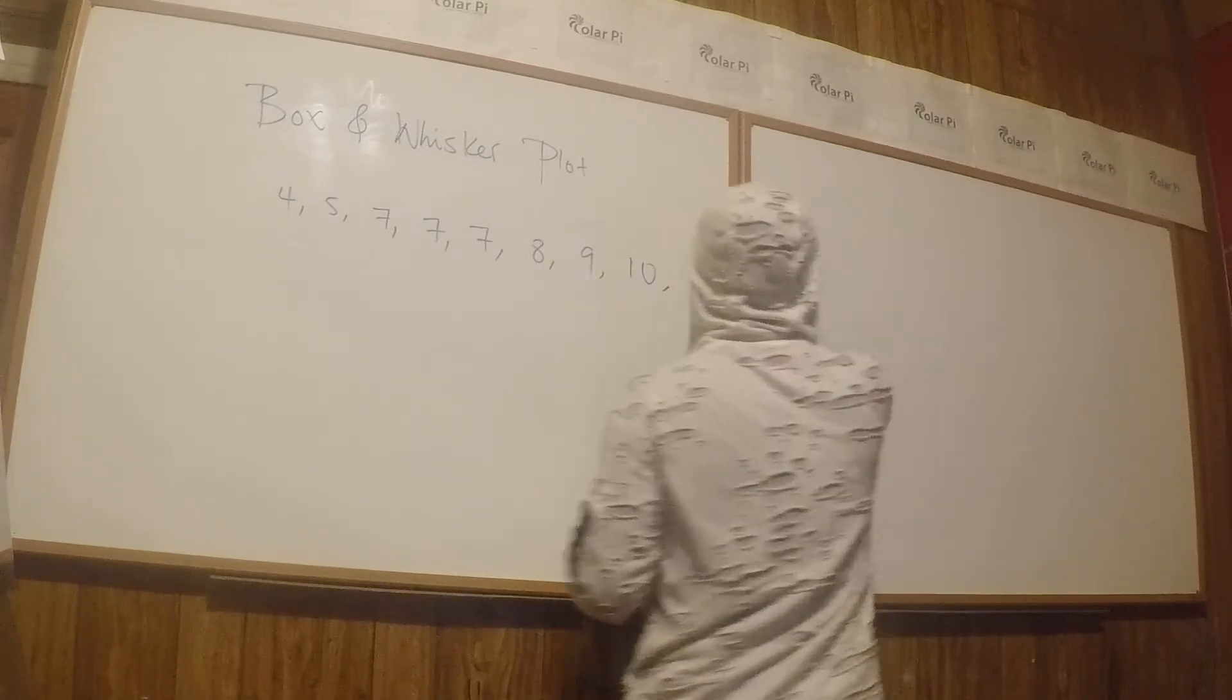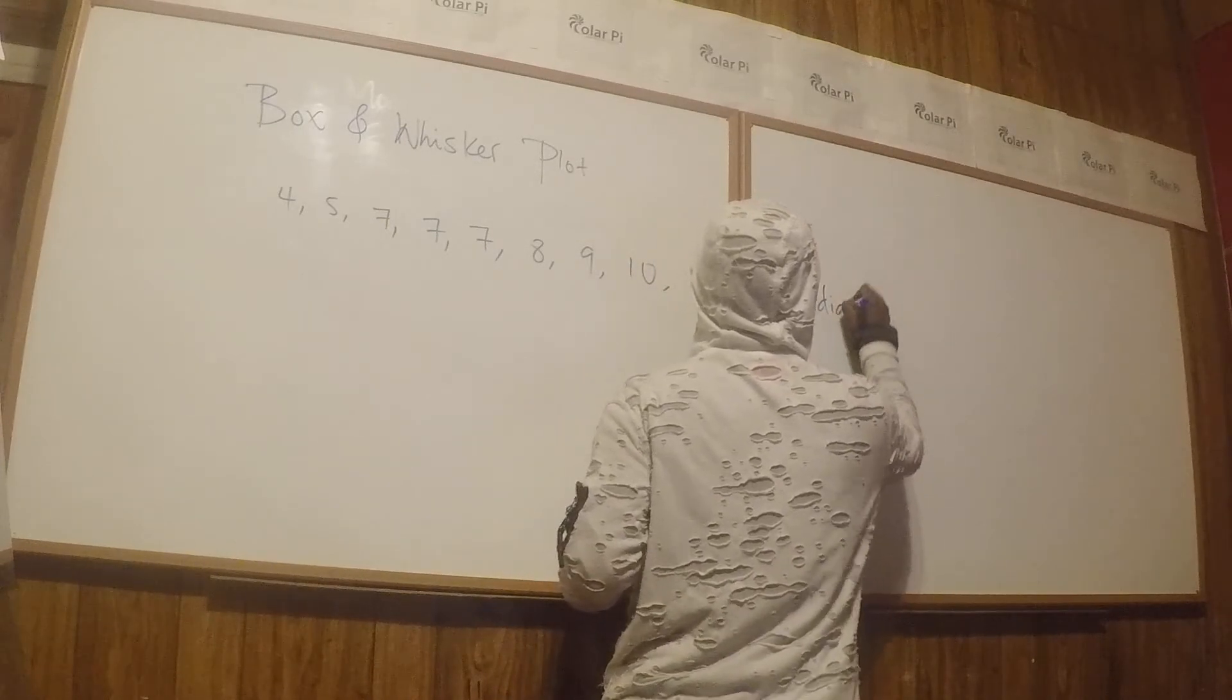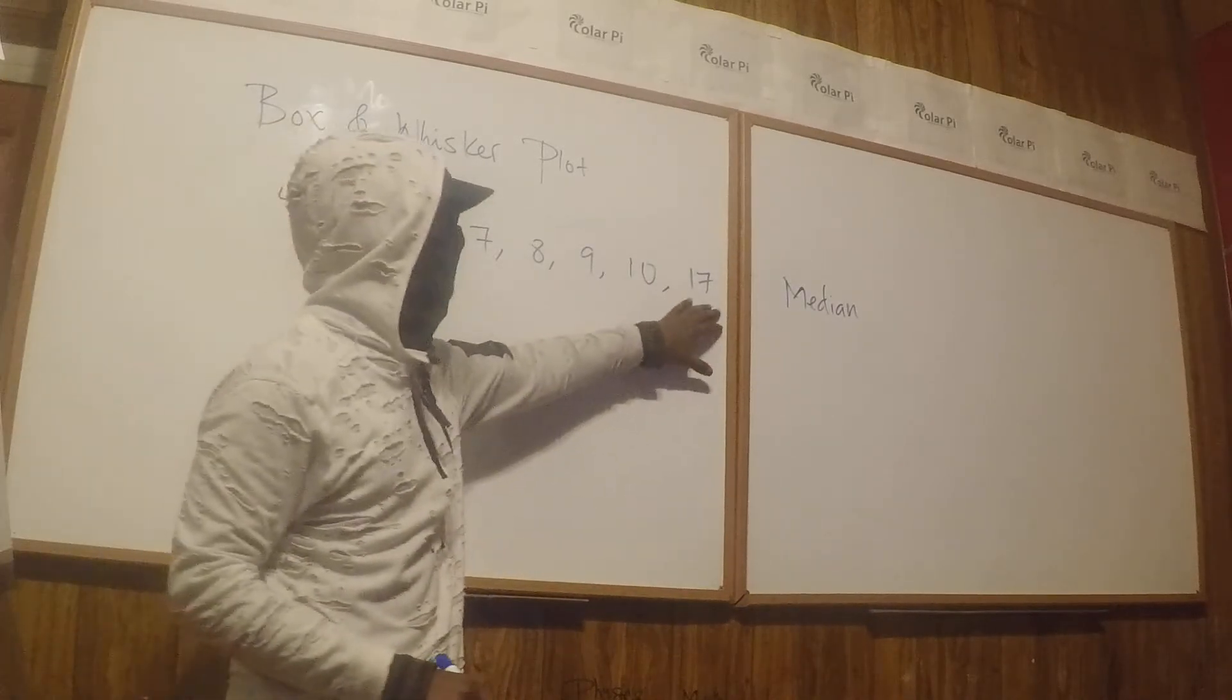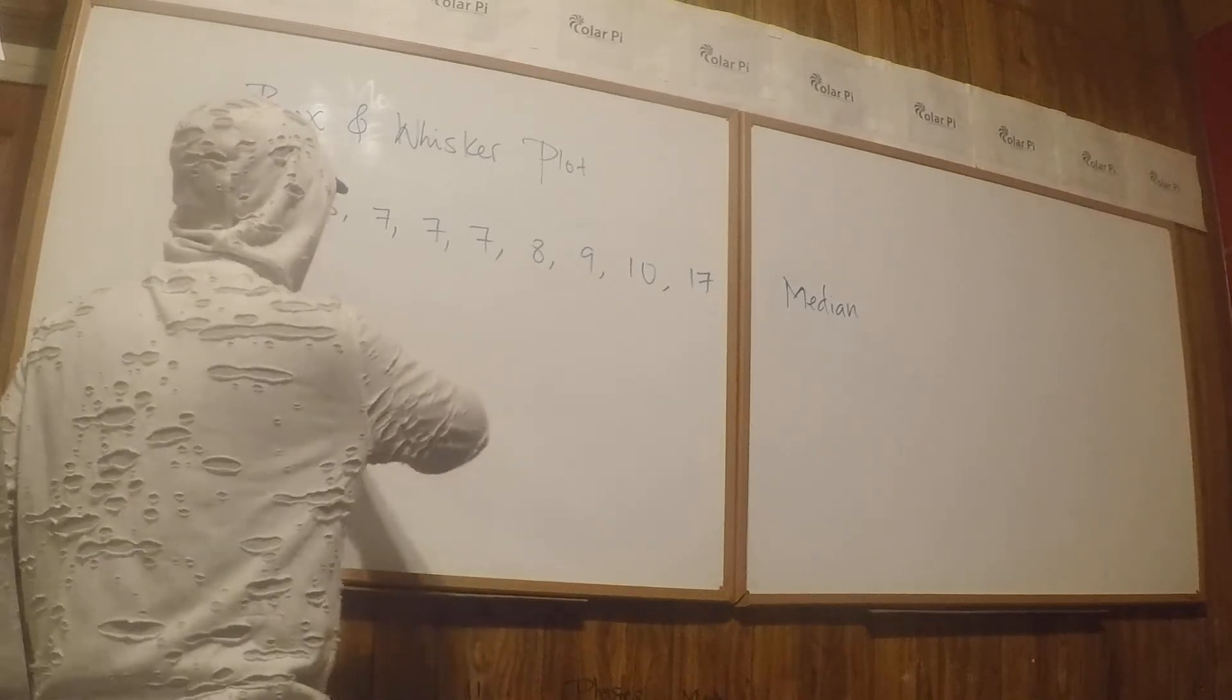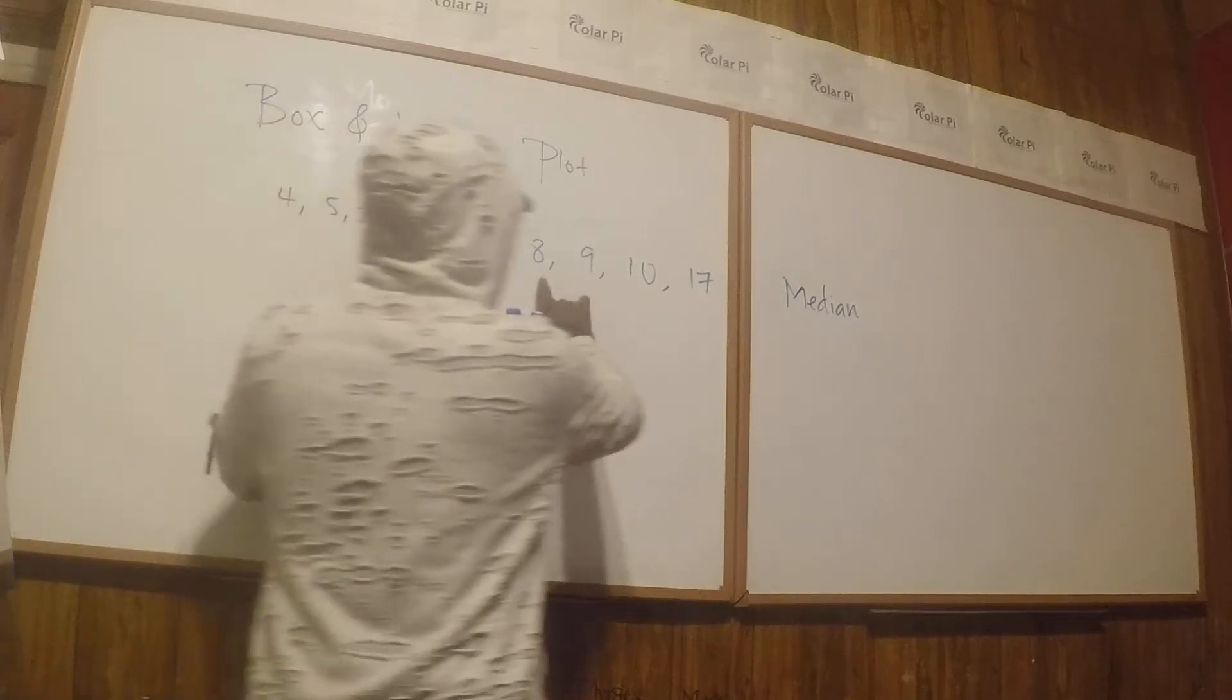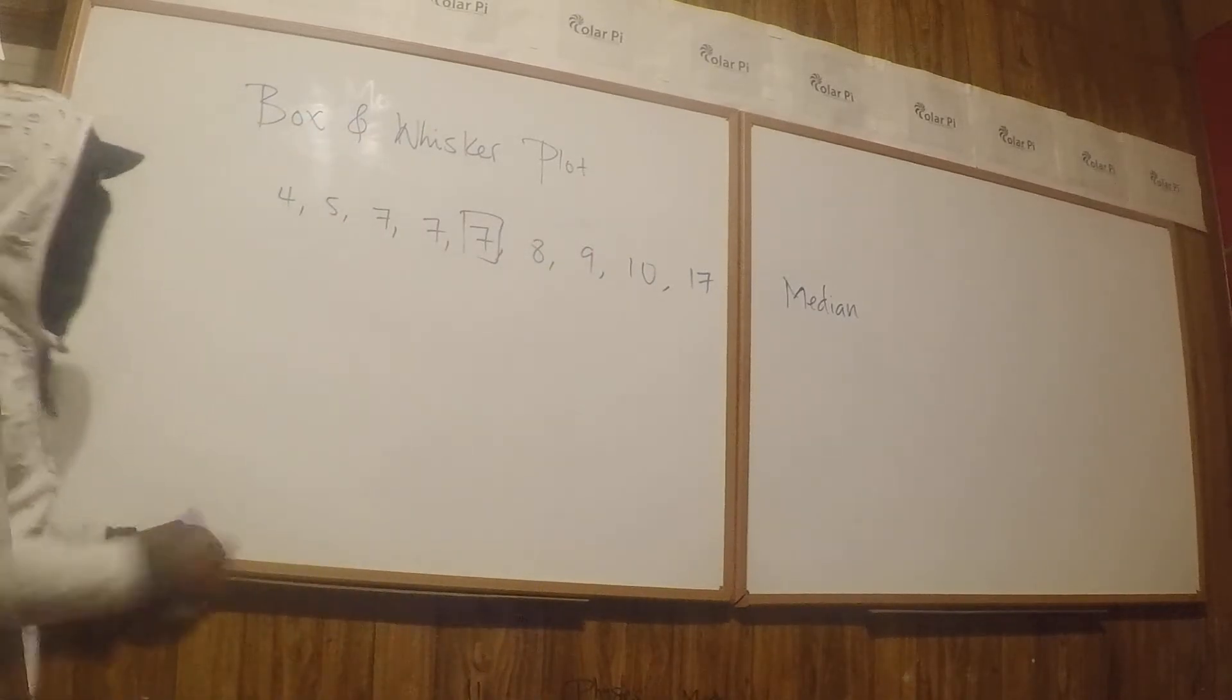Median—this is required for our box and whisker plot. So we're going to find the median. When we have nine data points, the median would be the middle number. Obviously if you have an odd number of numbers, then the median is exactly in the middle. So four to the left, four to the right, our median is 7.